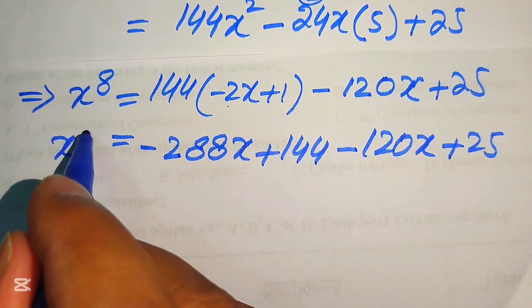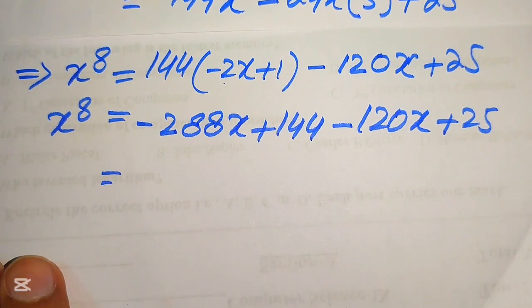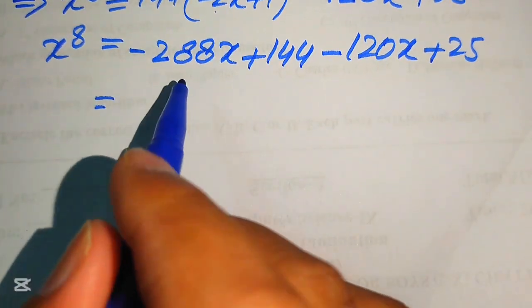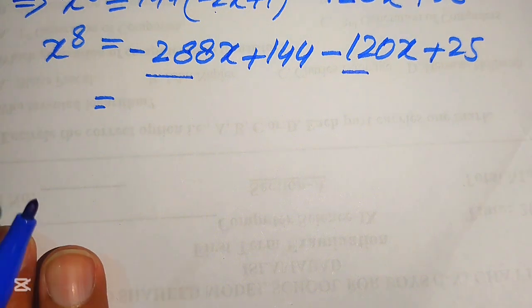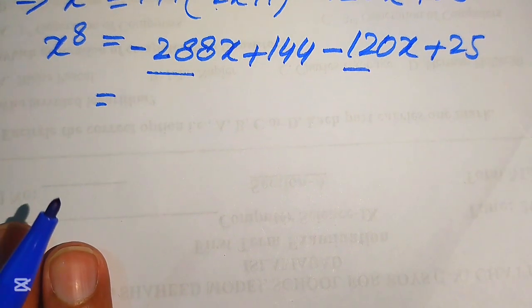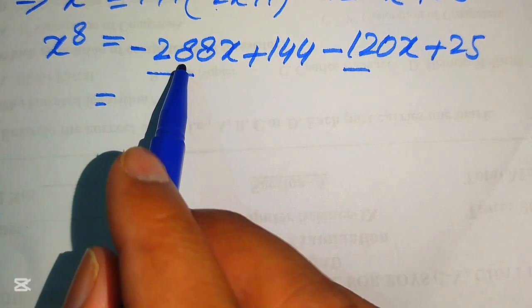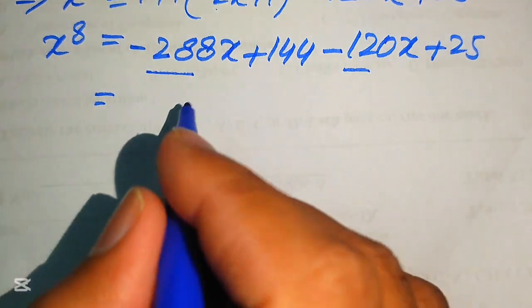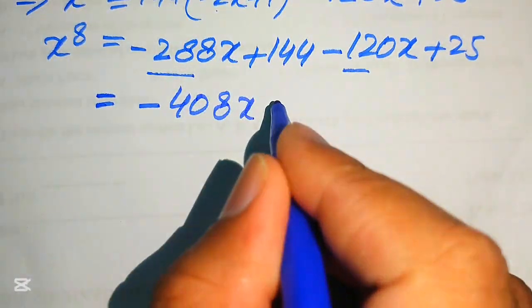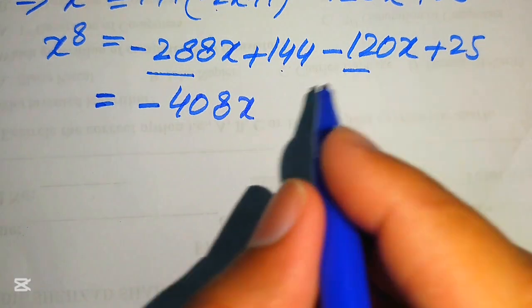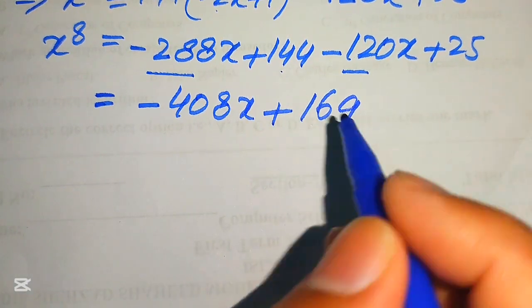Now we add or subtract the like terms. Combining minus 288x and minus 120x gives minus 408x. Adding the constants 144 plus 25 gives 169. Therefore, x to the power of 8 equals minus 408x plus 169.